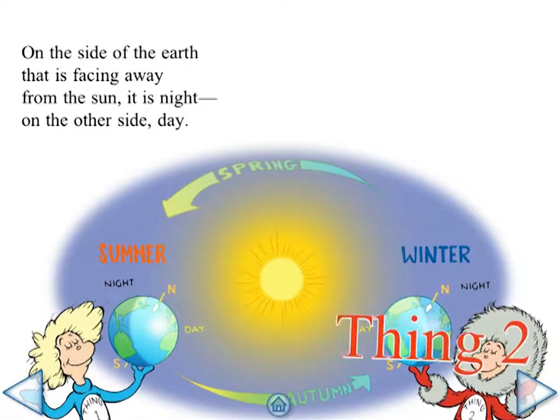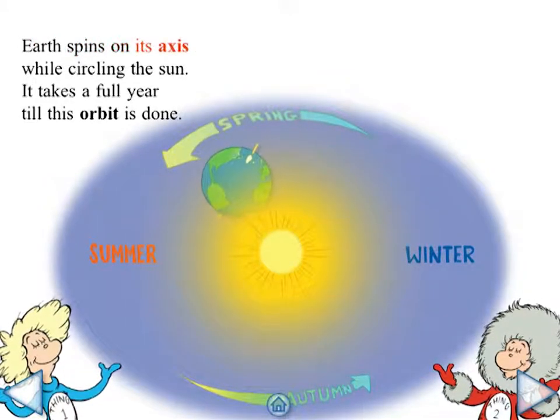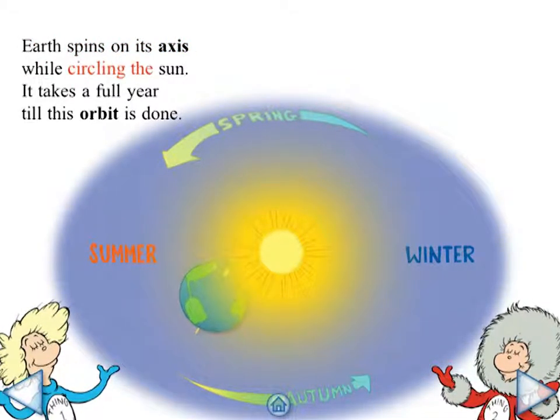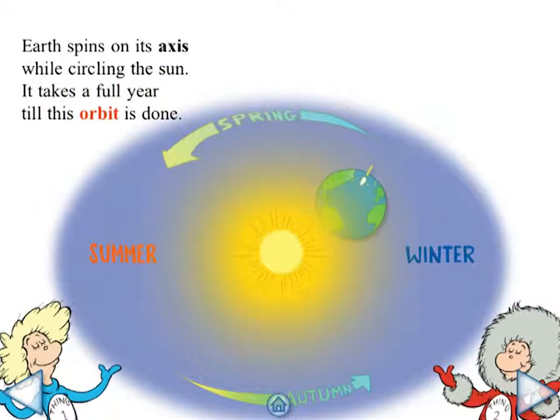Thing two. Earth spins on its axis while circling the sun. It takes a full year till this orbit is done.